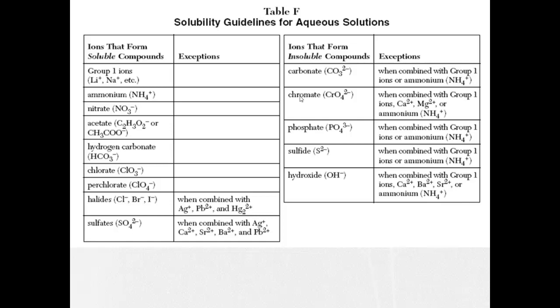Table F. Solubility guidelines for aqueous solutions. This is going to tell you what is and is not soluble in water. So we have to pay attention here to two things. There's one on the left that shows us what's soluble in water, and this gives us generally what's soluble, but we have to pay attention to these exceptions. Over here on the right, it's going to show ions that form insoluble compounds, things that won't dissolve. Once again, pay attention to the exceptions.